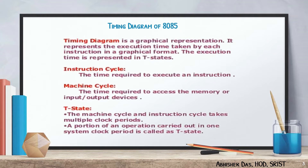There are three cycles in the timing diagram: the instruction cycle, machine cycle, and T-state. The instruction cycle is the time taken by the processor to complete the execution of an instruction. The machine cycle is the time required to complete one operation. The T-state is nothing but one clock period.